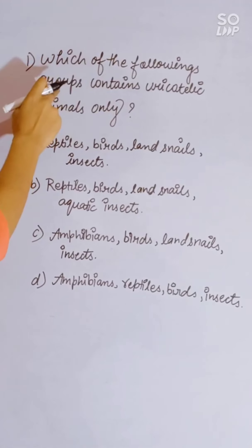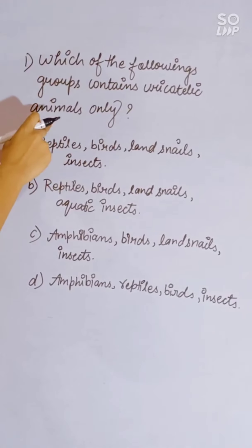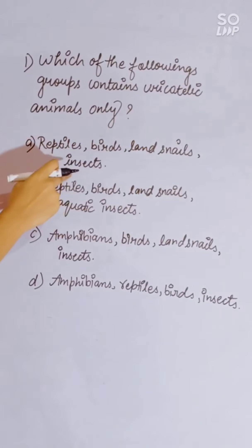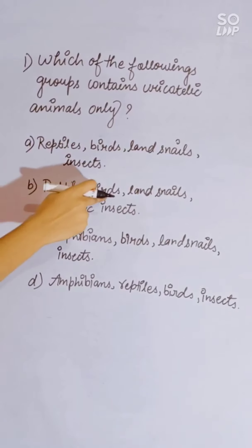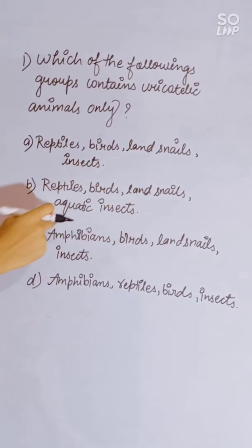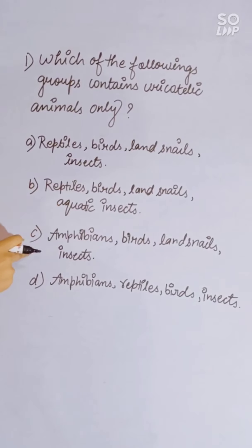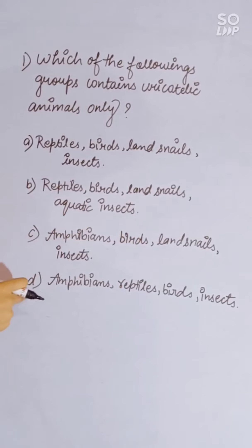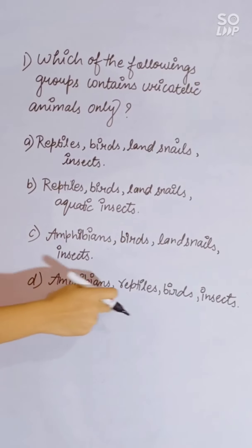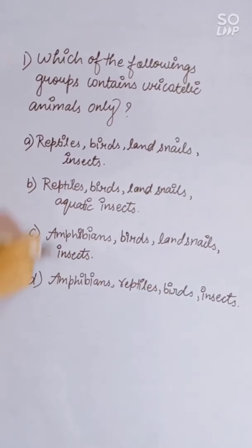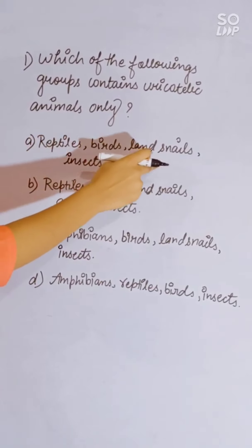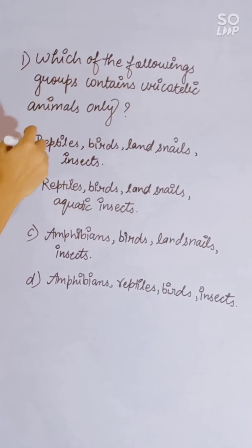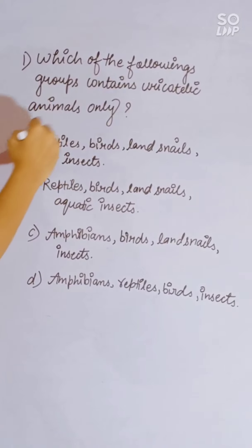Which of the following groups contains uricotelic animals? The options include various combinations of reptiles, birds, land snails, and insects. Reptiles, birds, land snails, and insects are uricotelic animals. First option is correct.